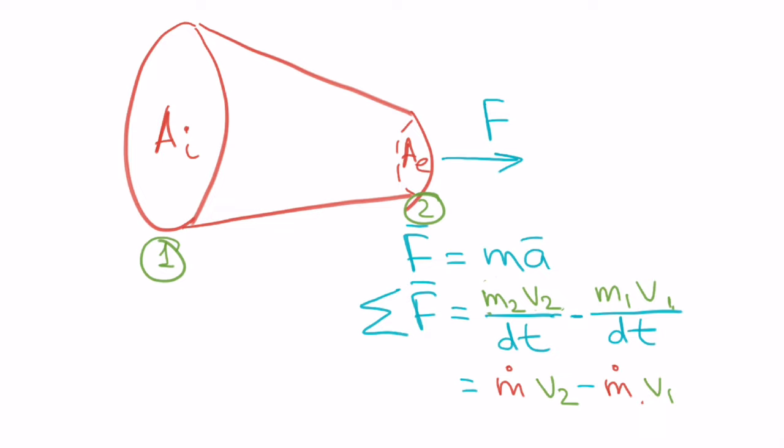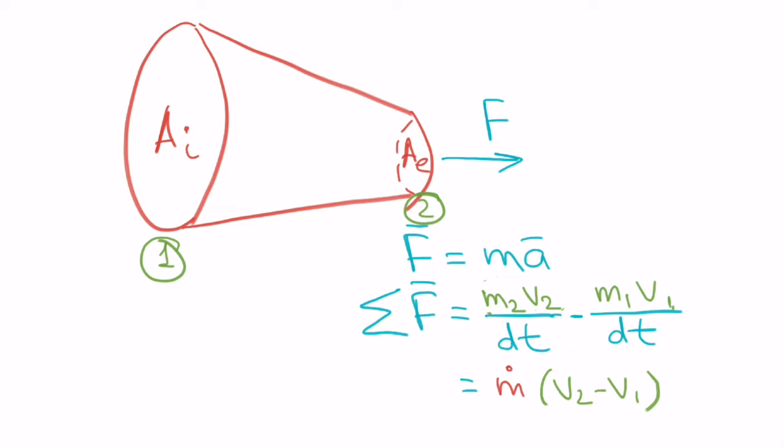Now because we have m dot in both of the terms, we can factor it out and we'll get an expression like this: m dot times (v2 minus v1). So this is what we get on the right hand side of our equation. And this expression means it's a change of momentum of the air as it passes through the control volume with a decreasing exit area. And notice how the velocities don't have the same value.